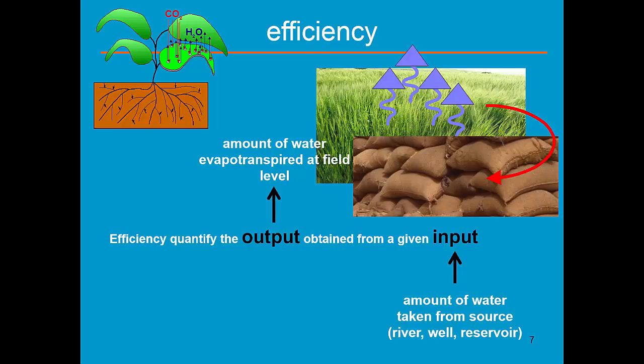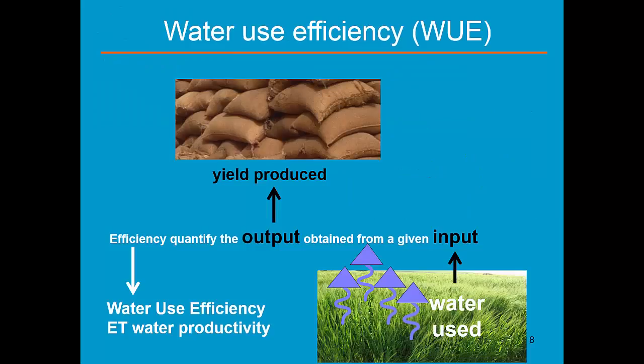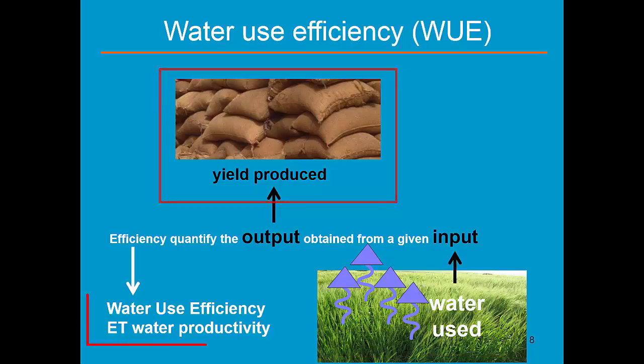Now, if I rearrange the terms and use as input the water used by evapotranspiration and as output the yield produced at crop maturity, then I have the water use efficiency or the ET water productivity.